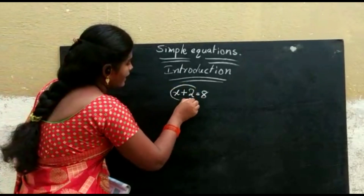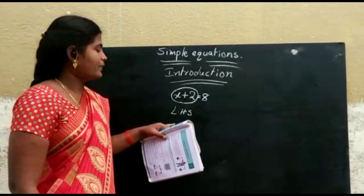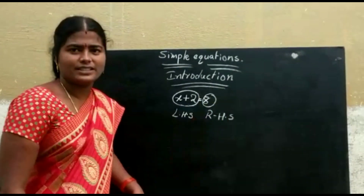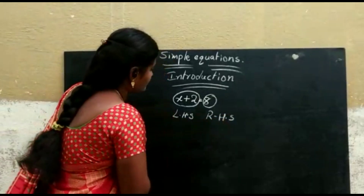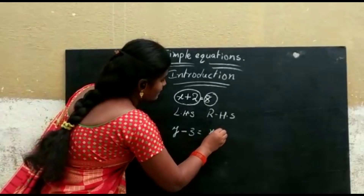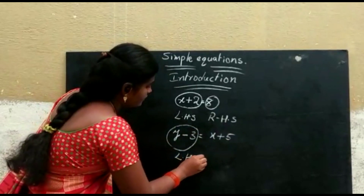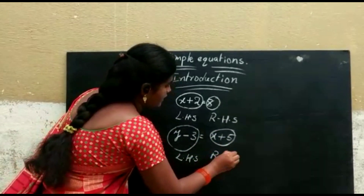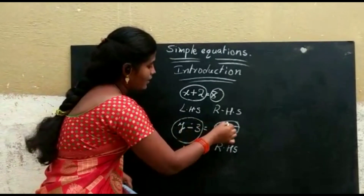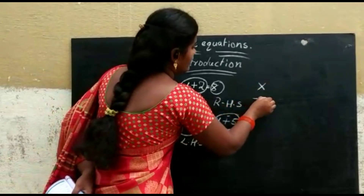These equations have a left-hand side and a right-hand side. For example, x plus 2 is the LHS — LHS means left hand side — and 8 is the RHS, which means right hand side. Simple equations connect terms using plus, minus, equals, multiplication, and division.